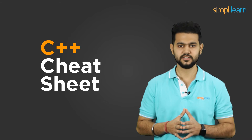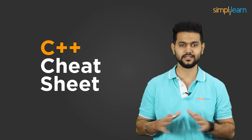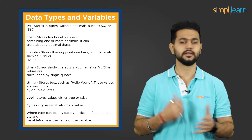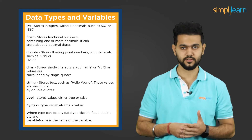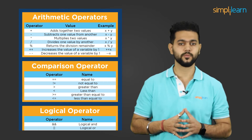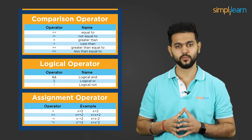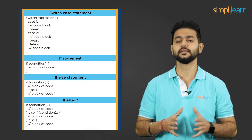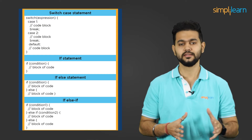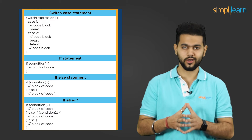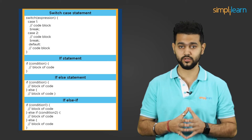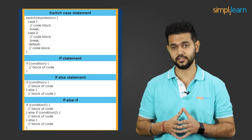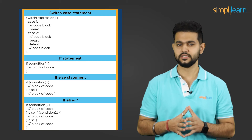This C++ cheat sheet will provide you with all the necessary knowledge on basic to intermediate concepts like data types and variables, operators like arithmetic operators, assignment operator and logical operator, etc. Following that, decision-making statements are there — these statements allow us to decide the order of execution of statements like if statements, if-else statements, and switch-case statements.